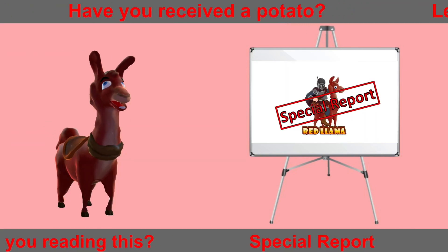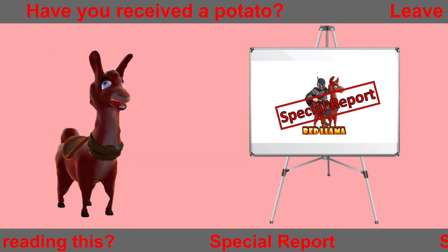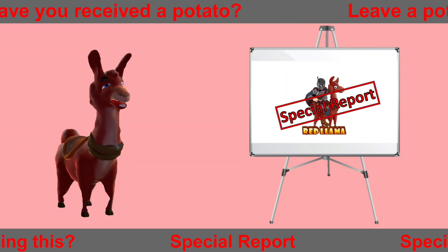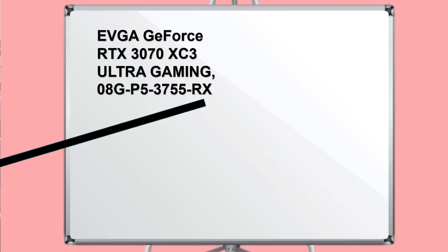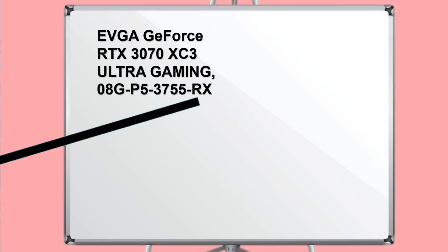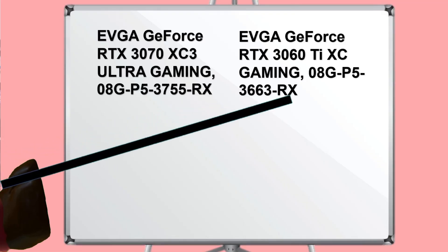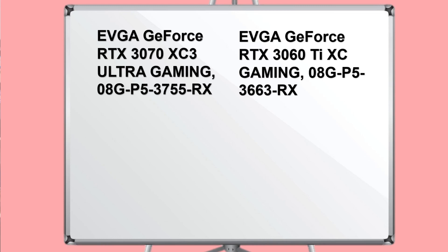Cards that end with RX that are not Ti — such as the 3070Ti and 3080Ti — those are full hash rate cards. You should be okay with those.